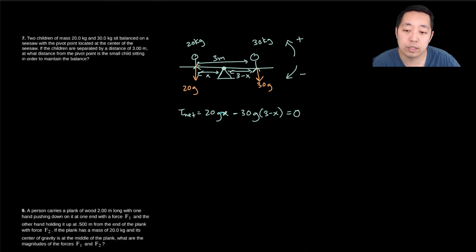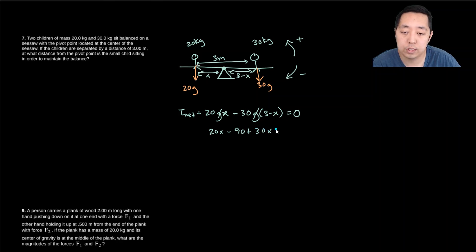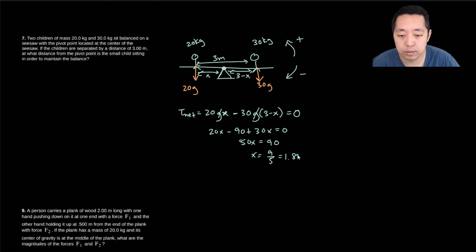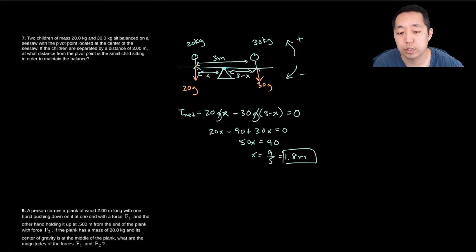Dividing through by g to cancel it: 20x − 30(3 − x) = 0, which gives 20x − 90 + 30x = 0, or 50x = 90. Therefore x = 9/5 = 1.8 meters. That's the distance from the pivot that the smaller child is sitting.